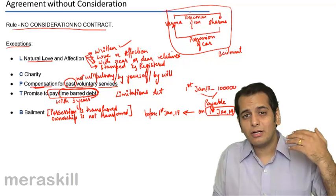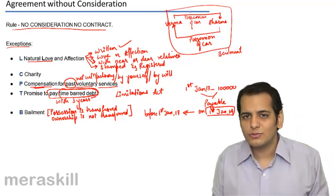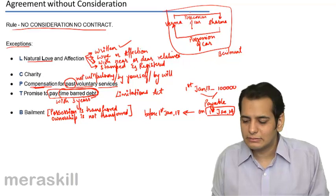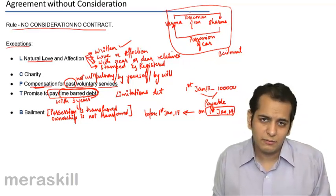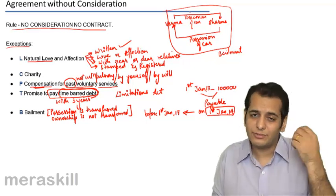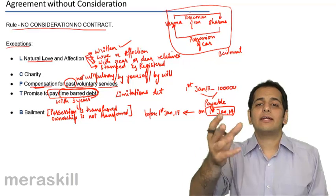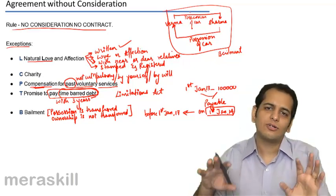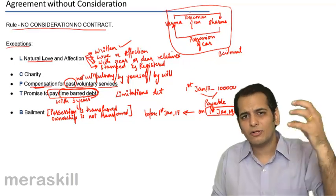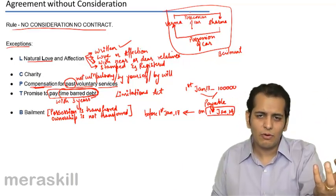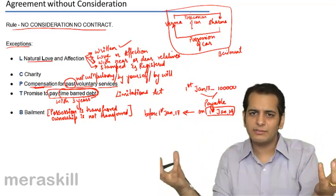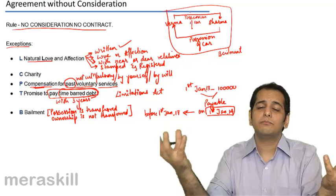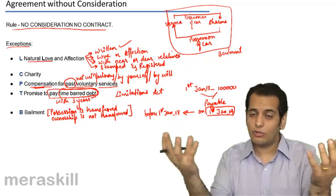However, it does not mean that in all contracts of bailment there is no consideration. If Mr. Sharma pays Mr. Verma Rs. 1,000 as hire charges for the car, then this contract has consideration — Mr. Sharma gets to use the car for one day and Mr. Verma gets Rs. 1,000 as hire charges. So a contract of bailment may have consideration or it may be without consideration. In either case, it remains a contract of bailment. Even when there is no consideration, it remains a valid contract and does not become void.